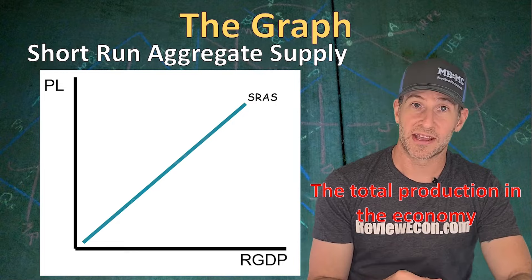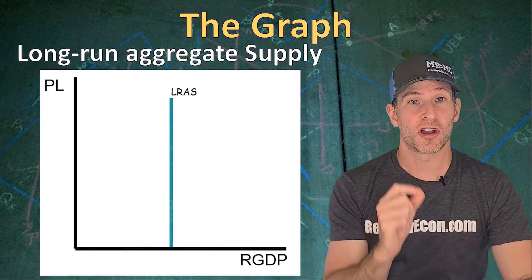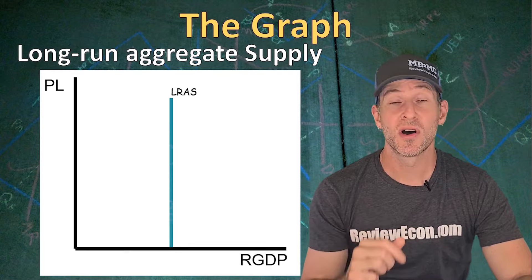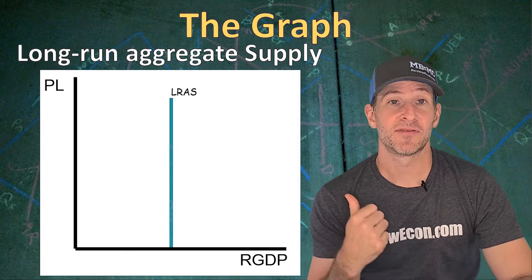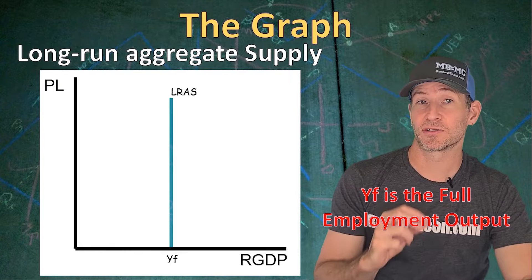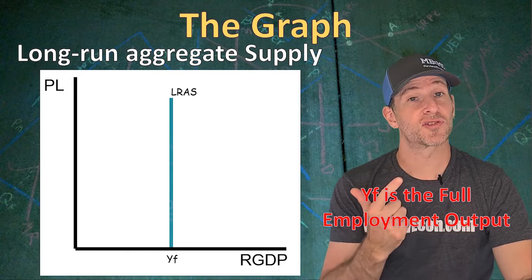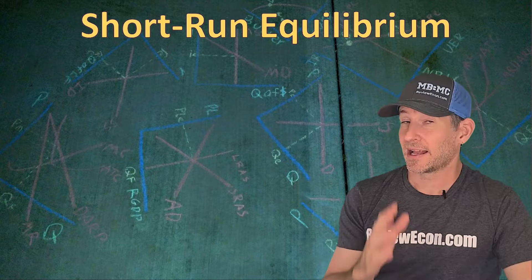That short run aggregate supply curve represents all production within the economy. Now because wages are flexible in the long run, we have a vertical long run aggregate supply curve. The long run aggregate supply curve shows us that at any price level, we will have the maximum sustainable level of output. We label that maximum level of output YF — that is the national income equal to the level of output when the economy is at full employment, meaning there is only frictional and structural unemployment.